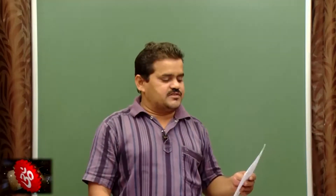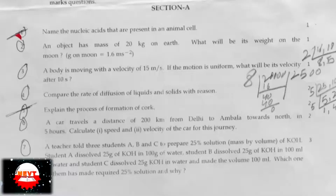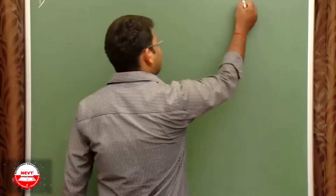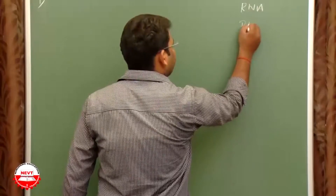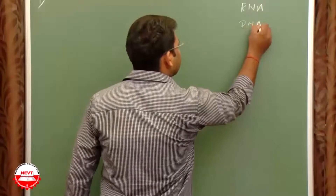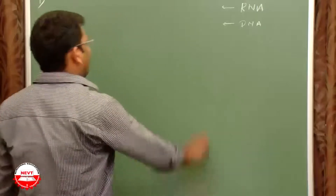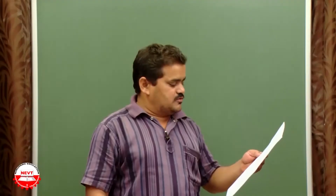Question number one: Name the nucleic acids present in an animal cell. The nucleic acids present in an animal cell are RNA (ribonucleic acid) and DNA (deoxyribonucleic acid). Both are present in the animal cell. RNA stands for ribonucleic acid, whereas DNA stands for deoxyribonucleic acid.